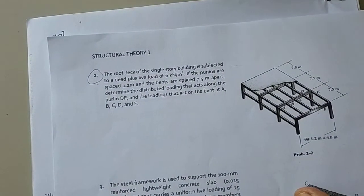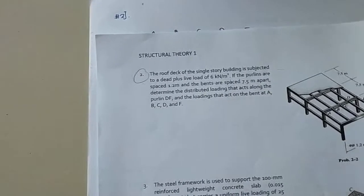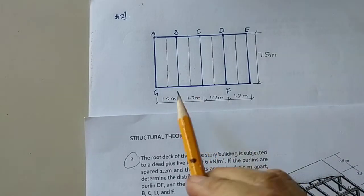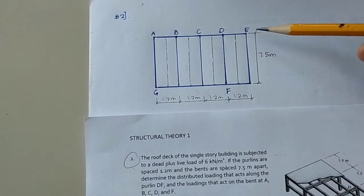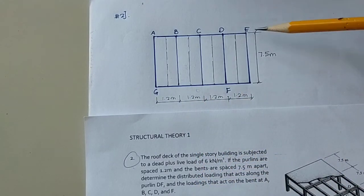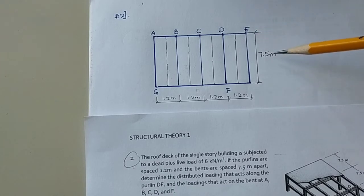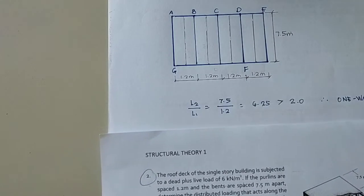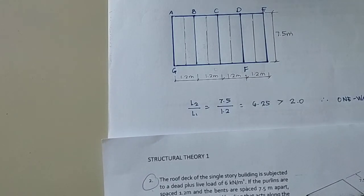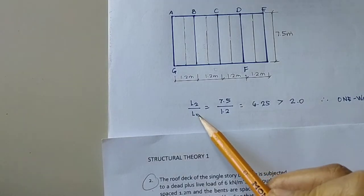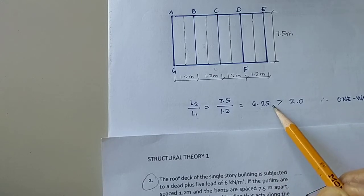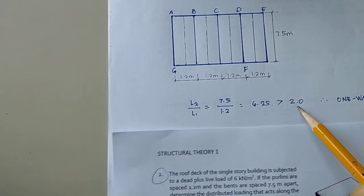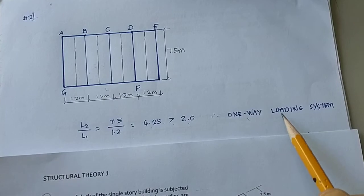Let us draw the plan of the flooring. So this is 4 at 1.2 meters and the length of the frame is 7.5 meters. Let us investigate if it is one-way or two-way. Long length over short length: 7.5 over 1.2 is 6.25. So this is greater than 2. Therefore, it is a one-way loading system.